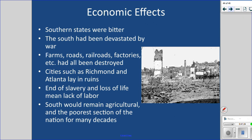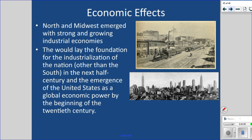The economic effects: Southern states were destroyed — farms, railroads, and factories had been burned down. Richmond and Atlanta had been burned down. The South's economy had become dependent on slave labor, and with that gone, they had nothing to replace it. Many working men had been disabled in the war. The South would remain poor and agricultural for decades to come. In the North and Midwest, industrial economies drove growth. Many people — especially African Americans — left the South and went north to growing industrial cities, creating a major demographic shift and laying the foundation for the industrialization of America.